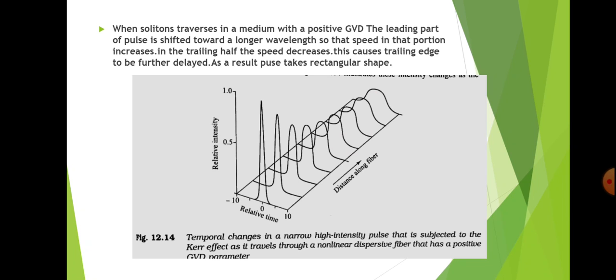This figure shows the temporal changes in the narrow high intensity pulse subjected to the Kerr effect — a non-linear effect — as it travels through a non-linear dispersive medium with a positive GVD parameter.